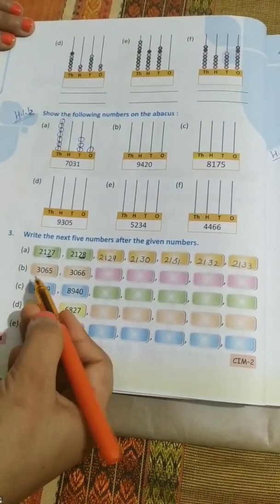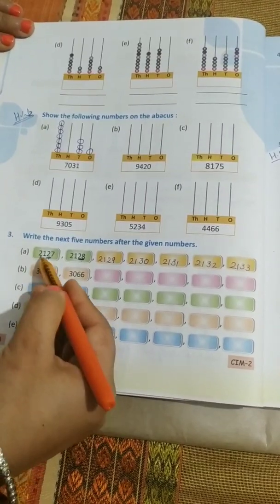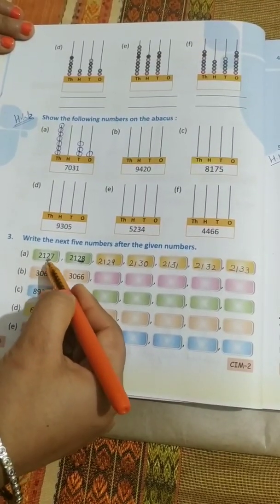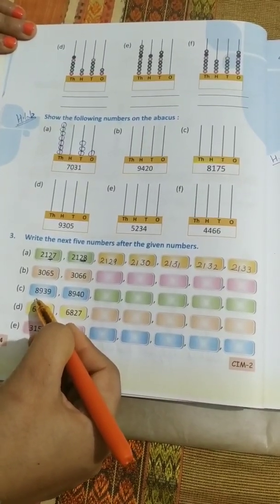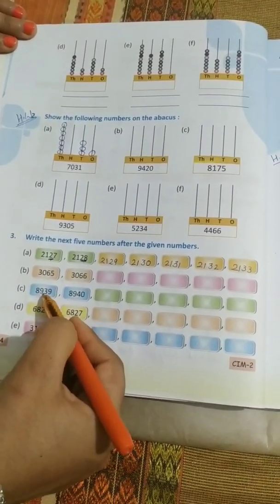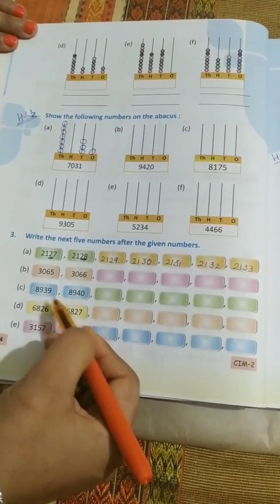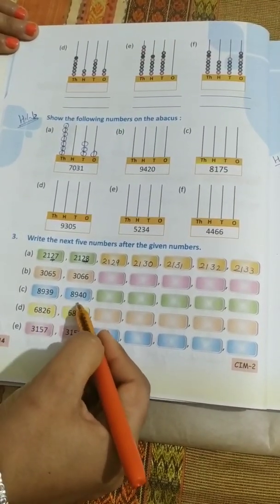Now B part, the same as it is in the A part. Here in the C part, here also 89, 89 same, 39 and then it is becoming 40. So this also you people can do.